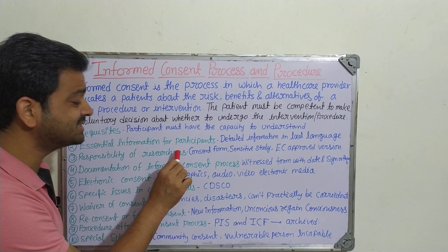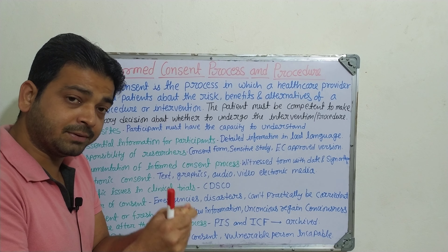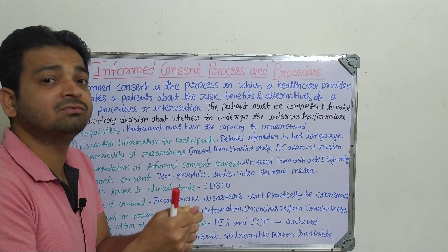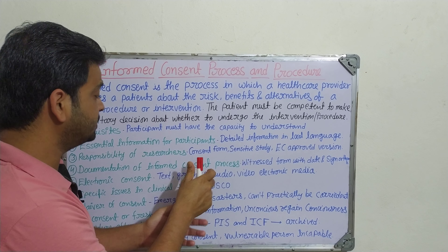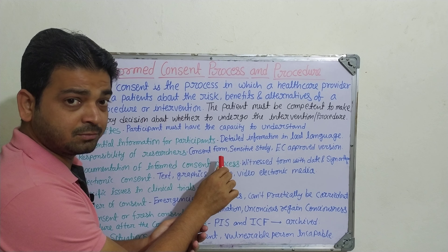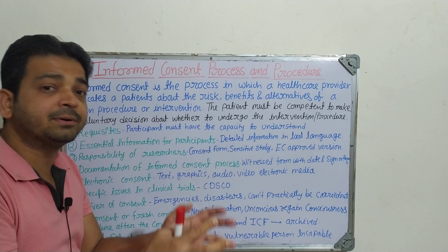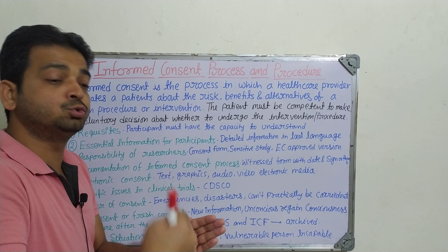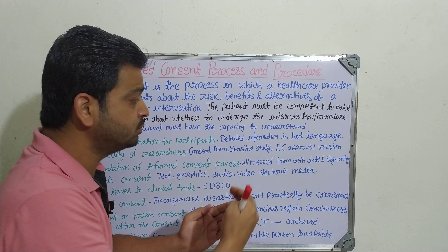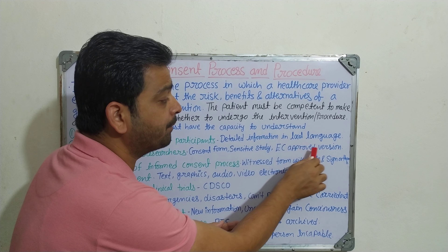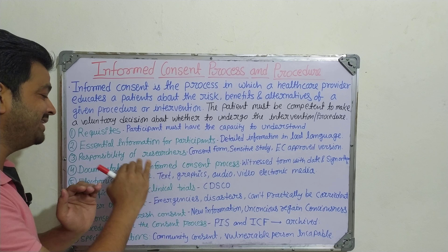The third one is the responsibility of researchers — those who are the responsible professionals involved in the phase four study or in the clinical trial. What is their responsibility regarding the consent form? They should ensure sensitivity study of that particular individual, whether they are sensitive to this particular new chemical entity or new drug. The ethical committee approved version of the protocol they are supposed to use — that is their responsibility.